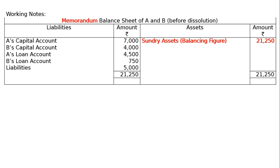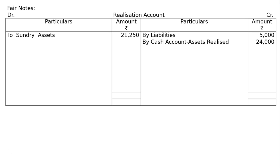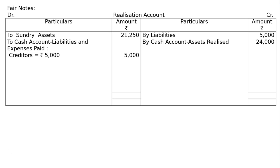Now prepare the Realization Account. Draw the format and write on the asset side: sundry assets rupees 21,250. On the credit side: by liabilities rupees 5,000, and by bank account — assets realized rupees 24,000 as stated in the question. We also have to show payment of liabilities on the debit side: to cash account, liabilities and expenses paid rupees 5,000. The credit side total is rupees 29,000.